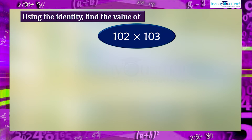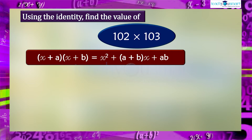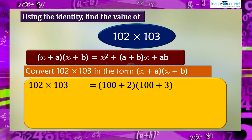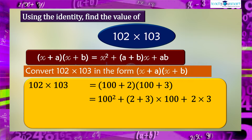We can find the value of 102×103 using this identity: (x+a)(x+b) = x²+(a+b)x+ab. First, convert 102×103 in the form (x+a)(x+b): 102×103 = (100+2)(100+3) = 100²+(2+3)×100+2×3 = 10,000+500+6 = 10,506.